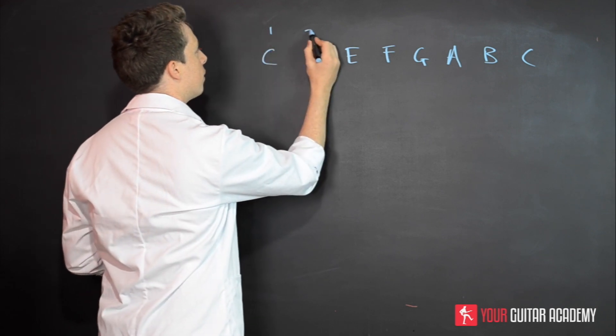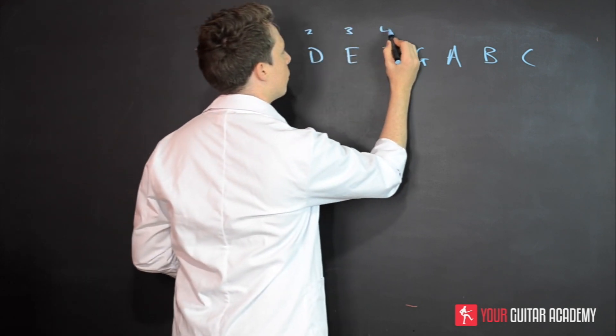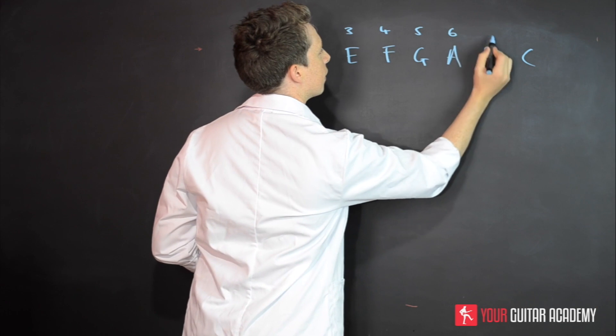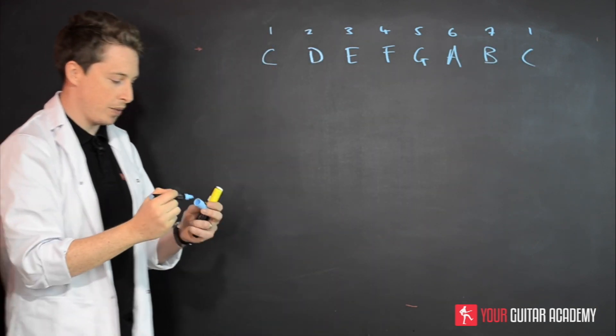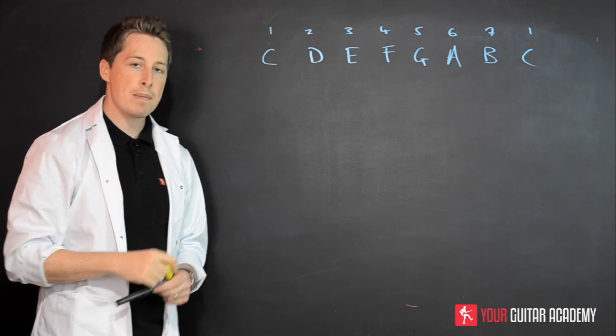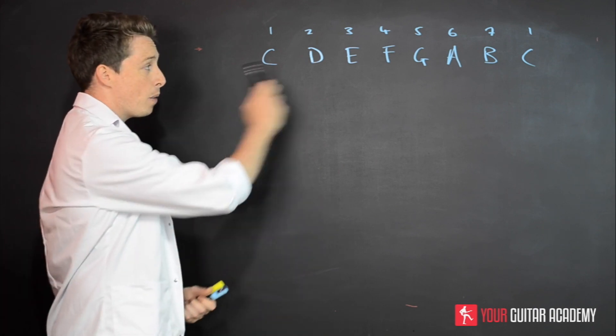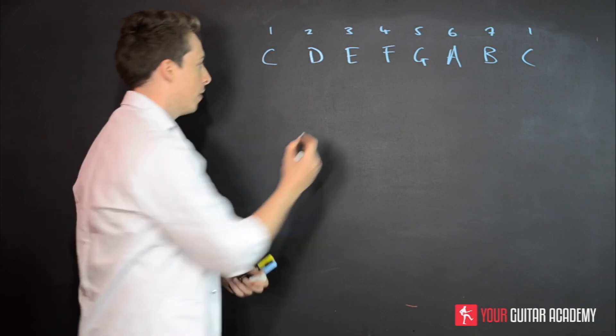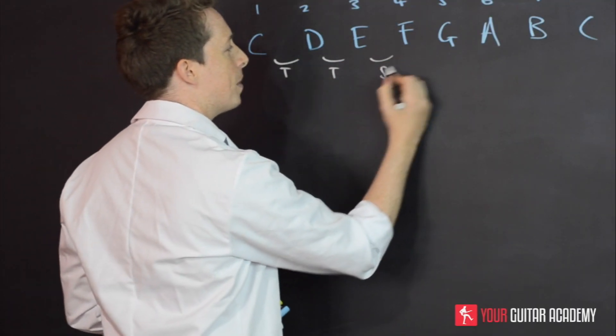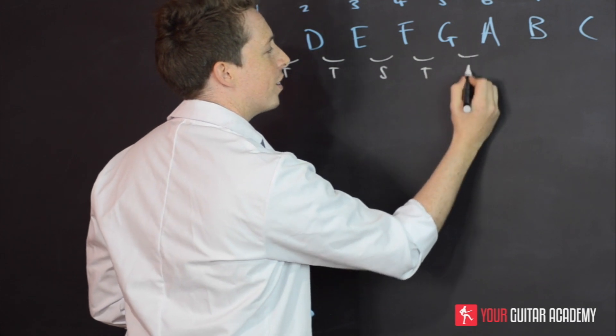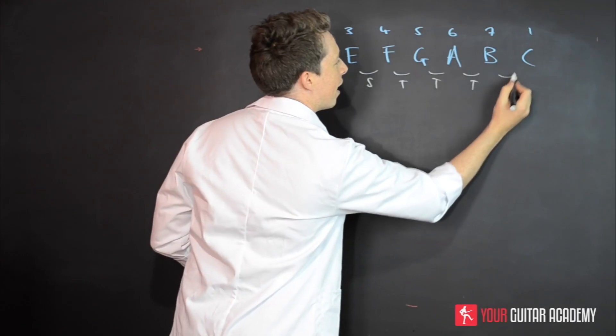And we'll also put the numbers above it. This is important, very important. So one, two, three, four, five, six, seven, and then one or eight again. They're your degrees of the scale.